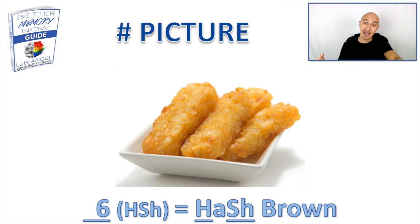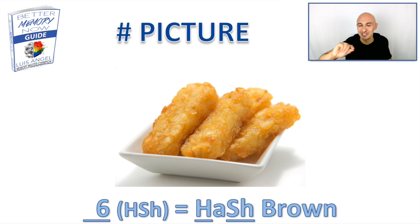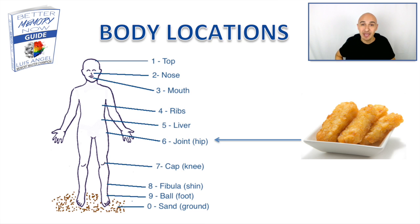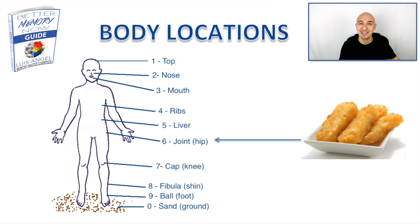For number six, we're going to picture a hash brown. The number six has a SH or CH sound. With the H and a few vowels you come up with hash, then brown at the end. Hash brown for number six. Picture that on your hip joint — maybe your hip joint is really hungry, so you're feeding it hash brown.